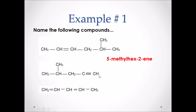In our next example, we want to find the longest carbon chain that includes the multiple bond — one, two, three, four, five — and number that chain from the end that gives the multiple bond the lowest value. Therefore, this will be our first carbon, our second, our third, our fourth, and our fifth. We have a methyl branch coming off the fourth carbon in the chain. Our name is 4-methyl pent-1-yne. Pent-1-yne represents that we have a five-carbon chain with a triple bond coming off the first carbon in the chain, and we have a methyl branch coming off the fourth carbon.